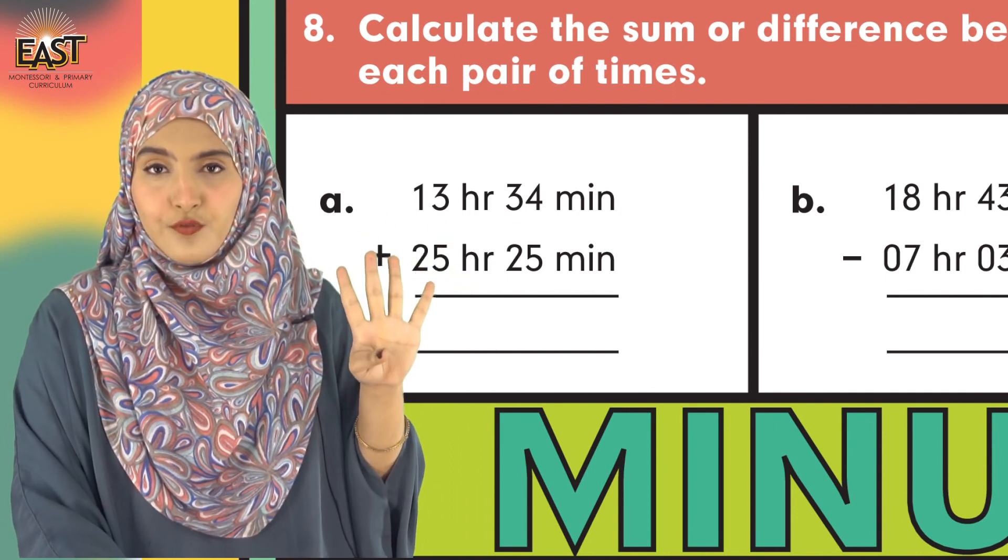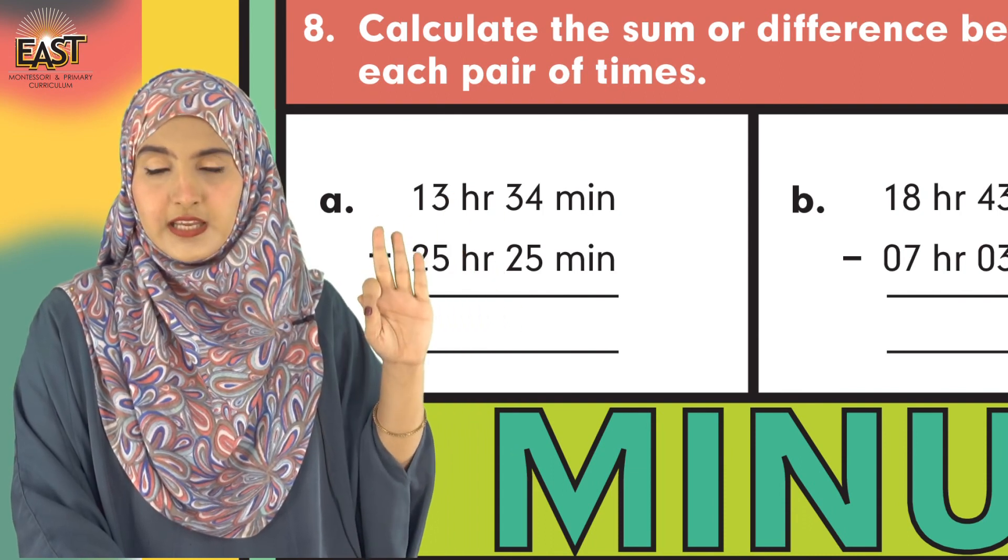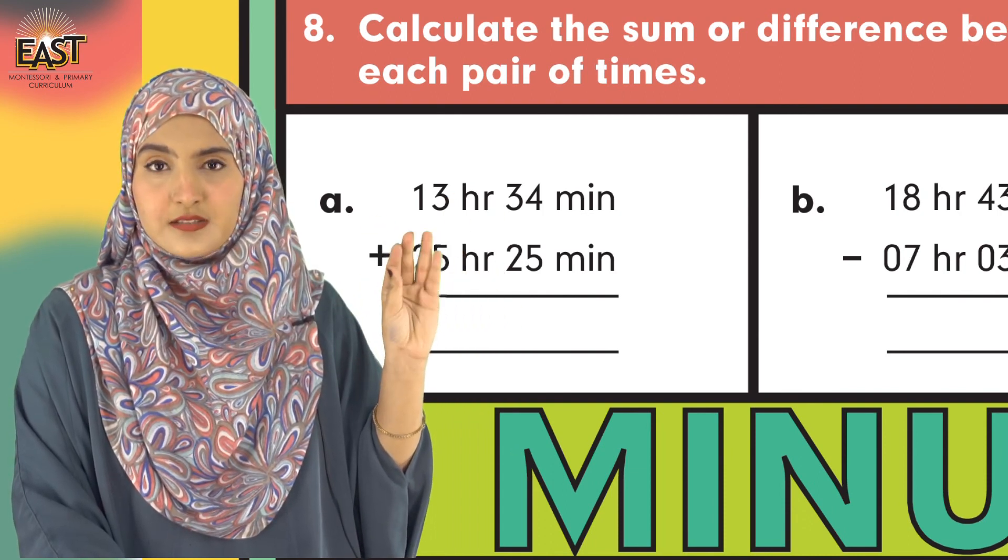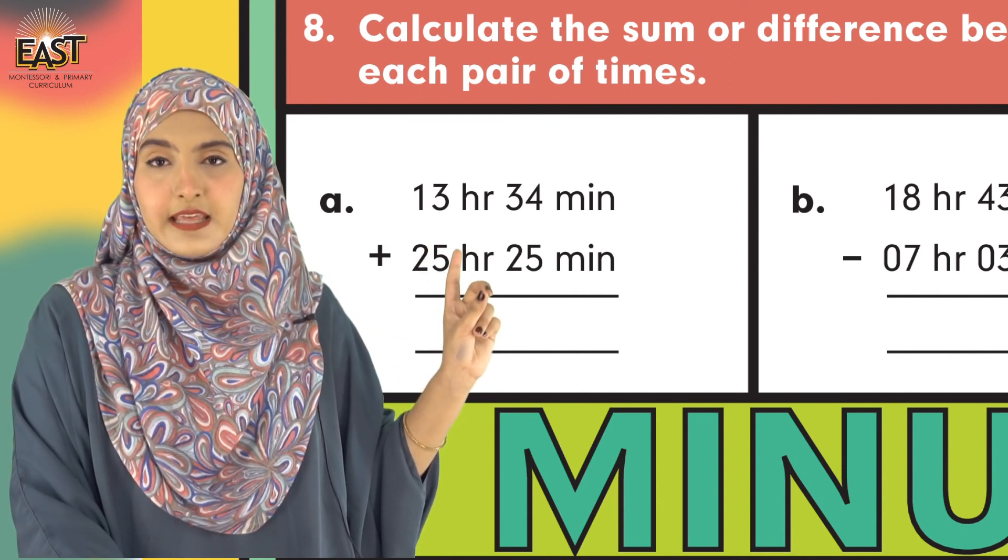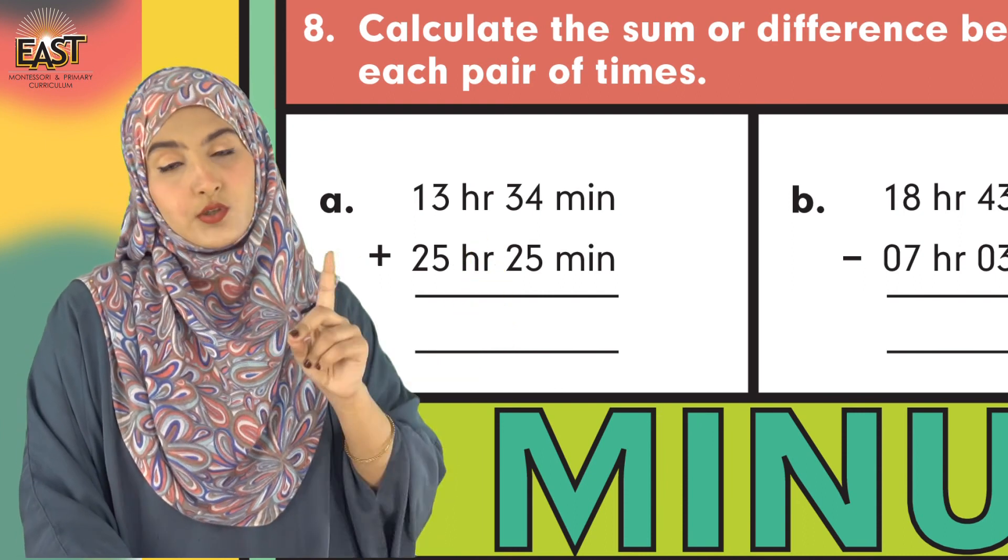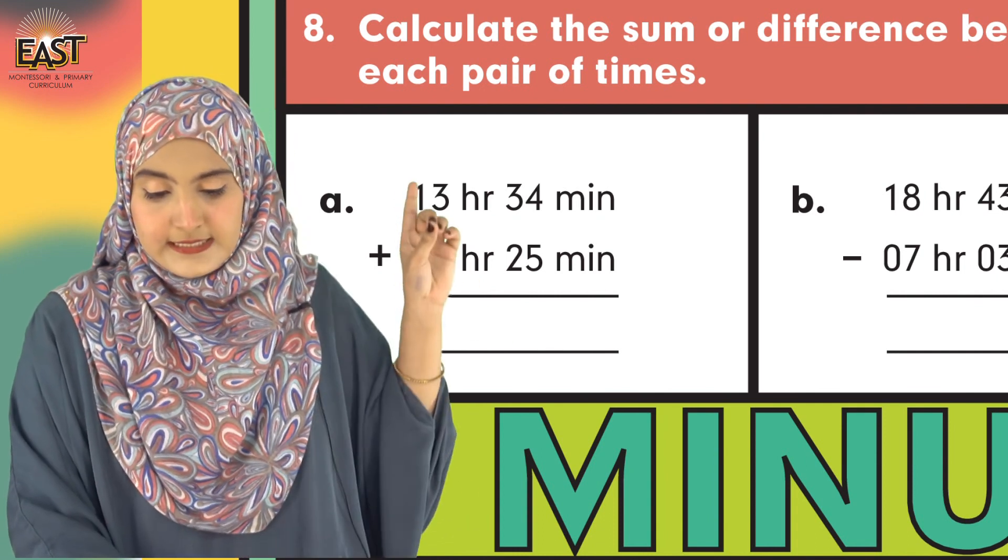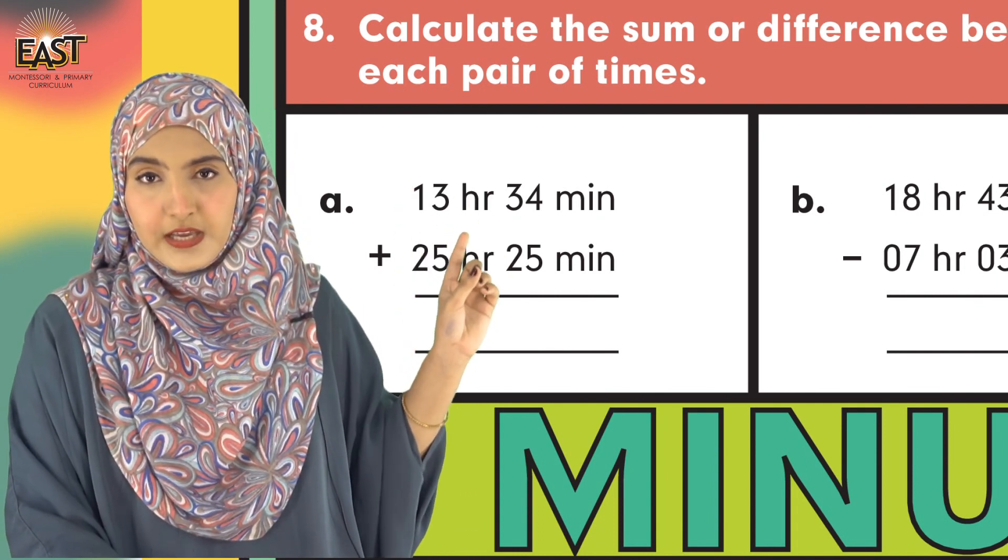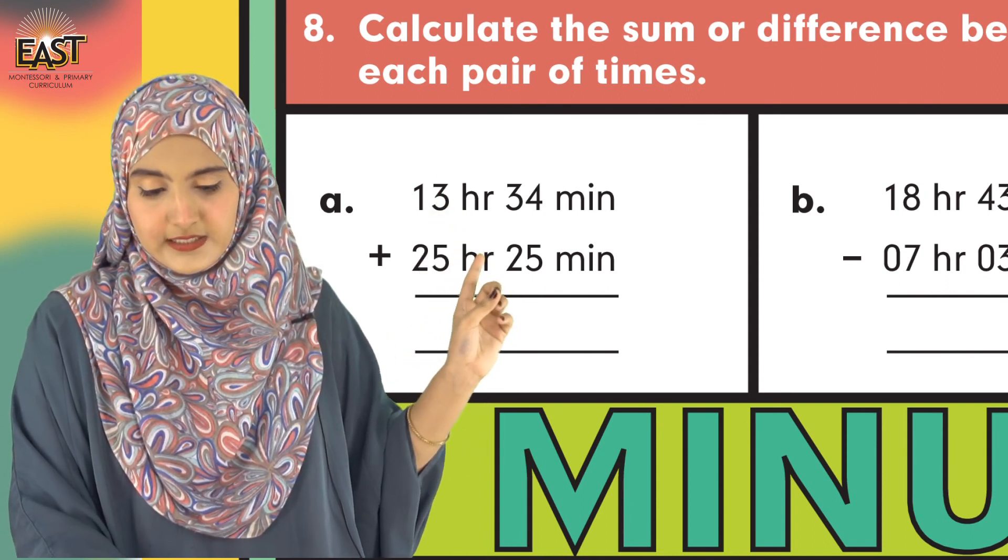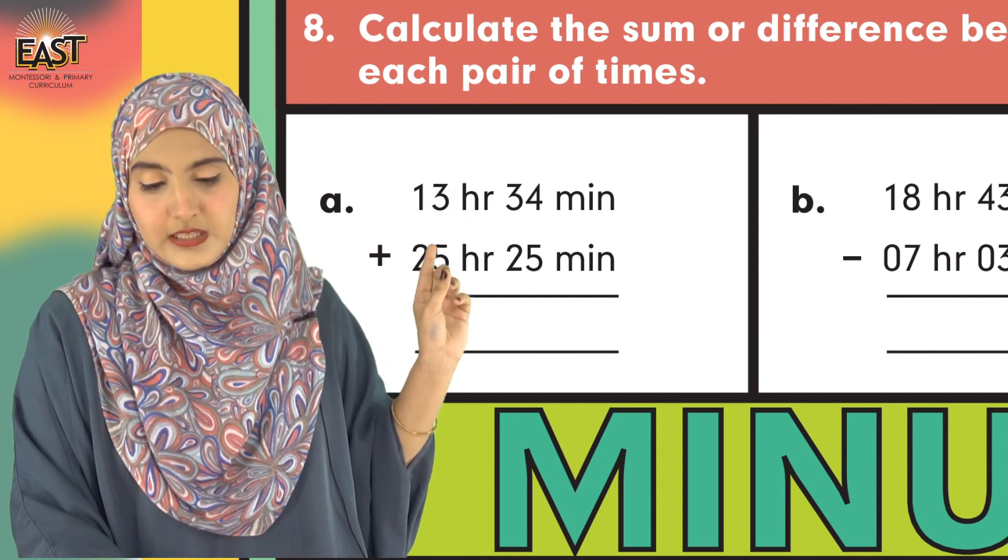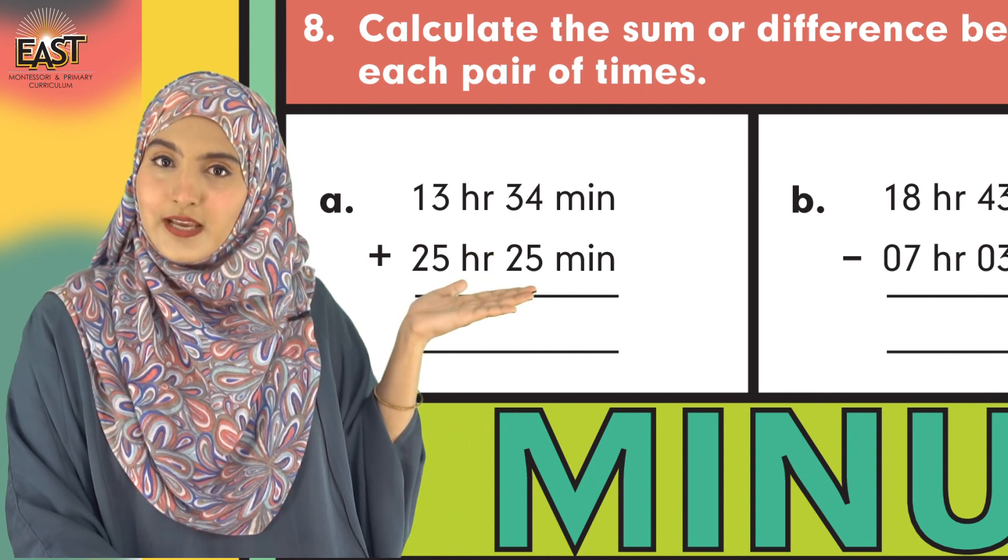5 plus 4 is 9, and 3 plus 2 gives us 5. After adding them, we wrote 59 minutes. Don't forget to mention the unit. 13 hr and 25 hr: 3 plus 5 gives us 8 hr. 1 plus 2 gives us 3, so 38 hr. Altogether, the sum is 38 hr 59 min.